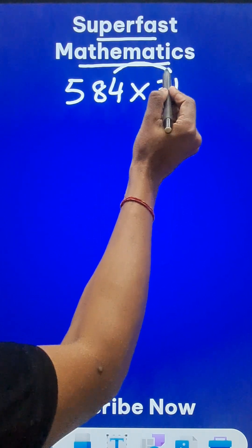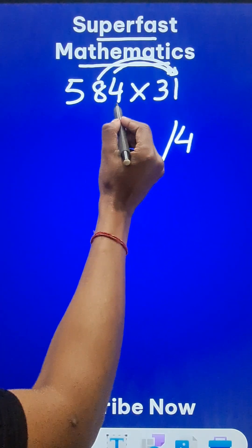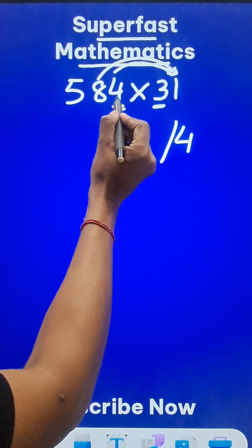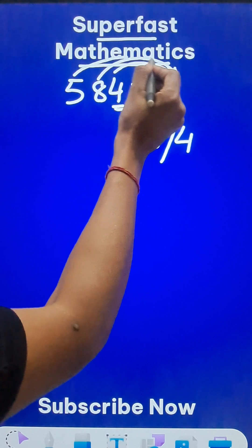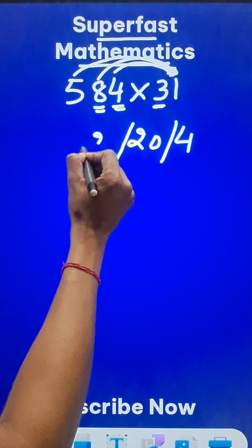So 4 times 1 is 4. I will write a 4 here. Then 8 times 1 is 8. And because we have a 3 here, you need to triple this. So 8 plus 12 is 20. And then start from 5. 5 times 1 is 5. And 3 times 8 is 24. 24 plus 5, 29.